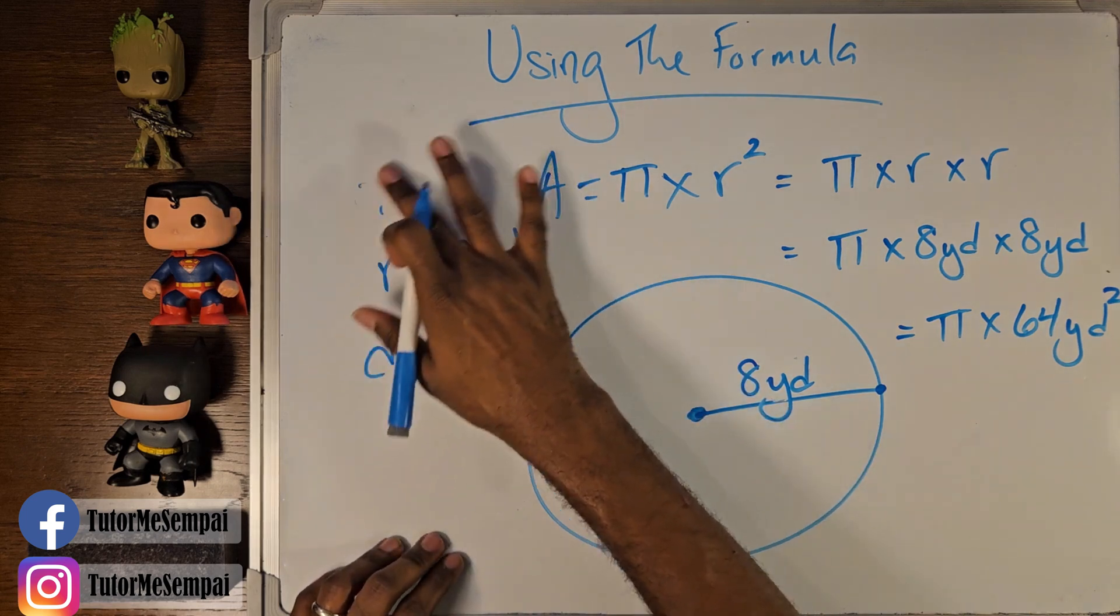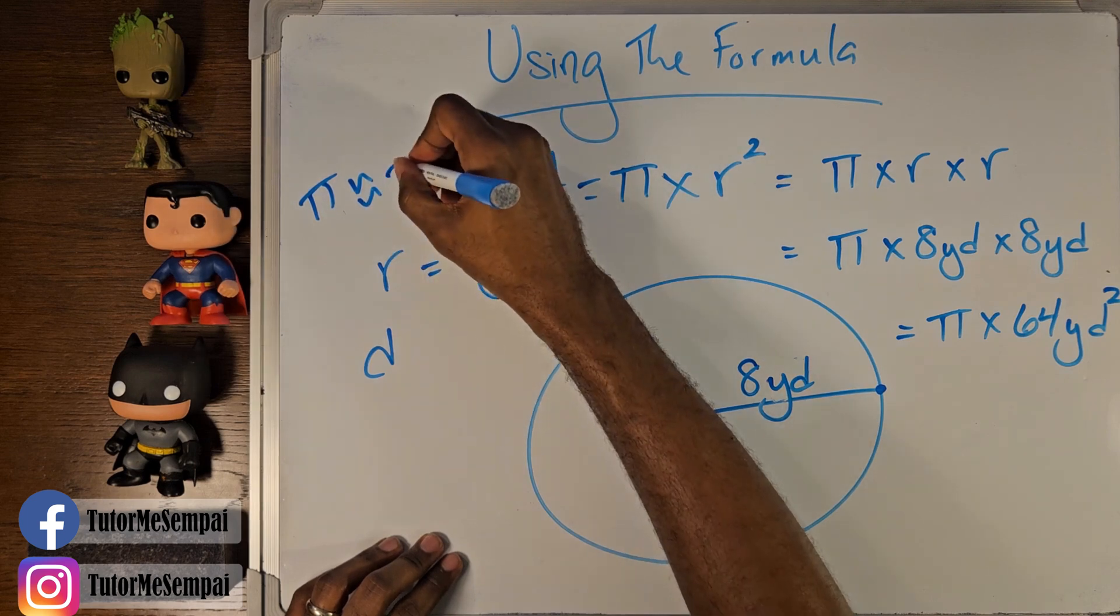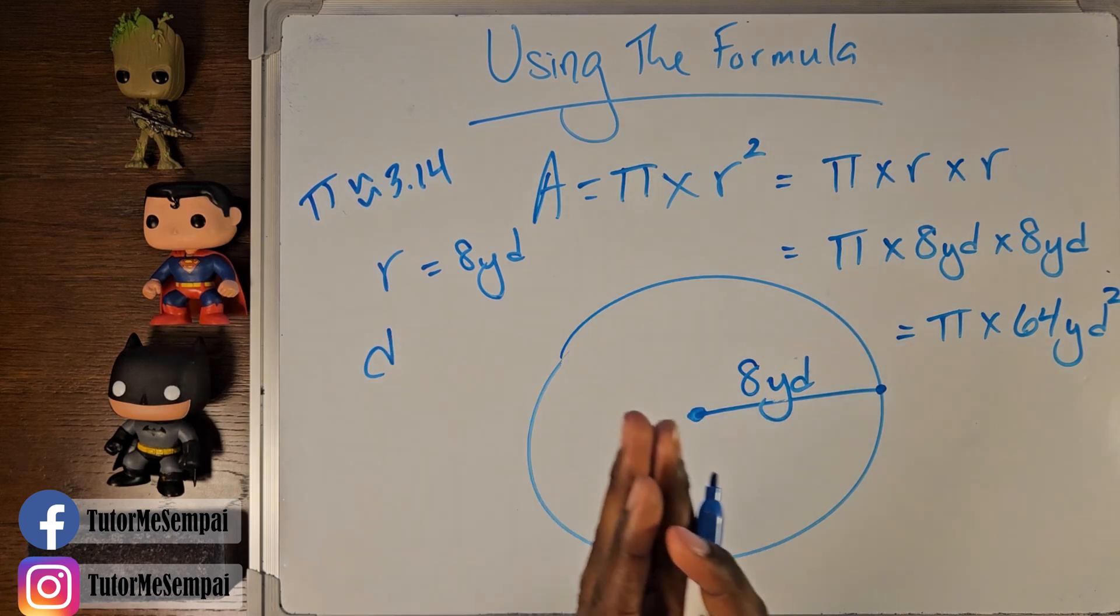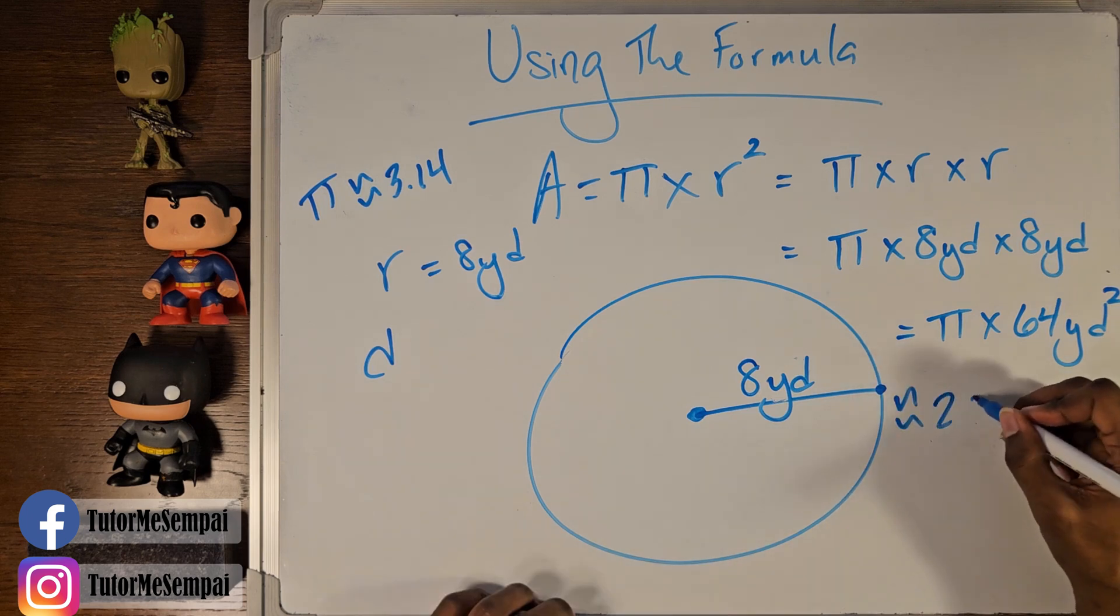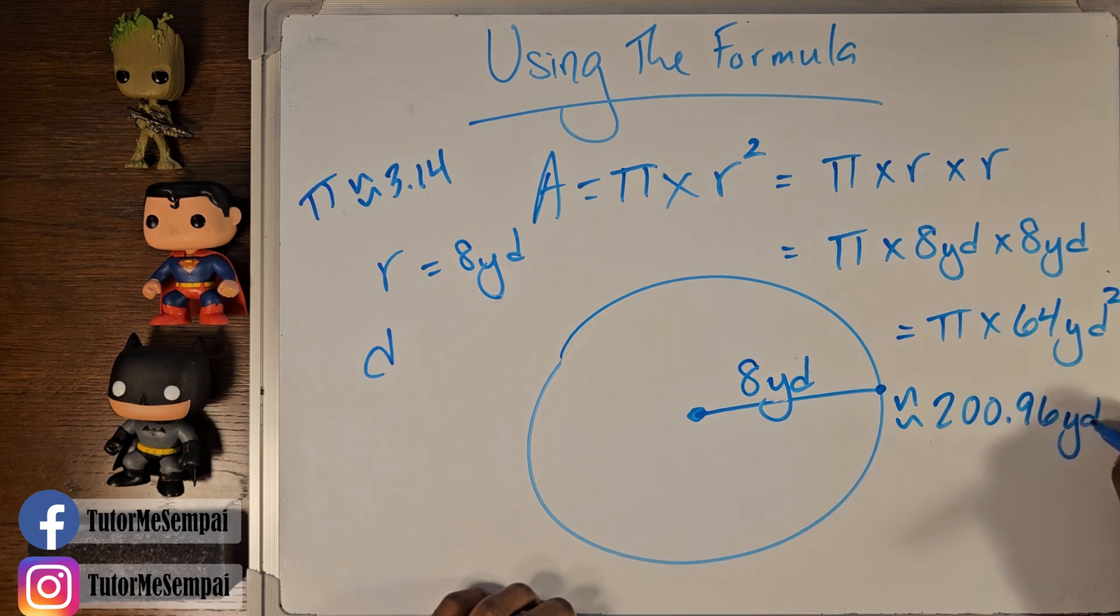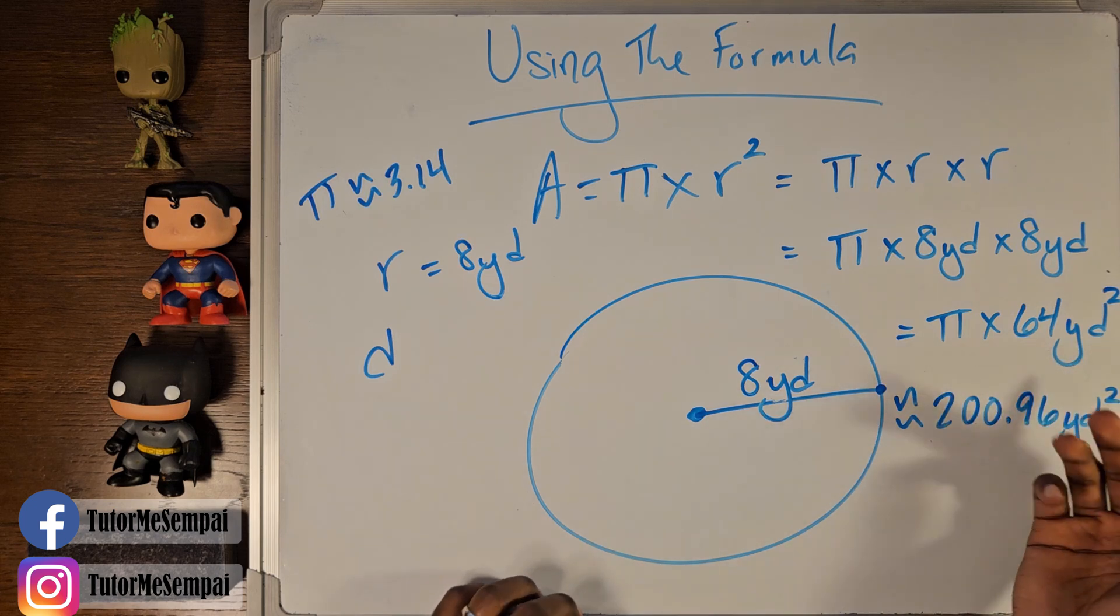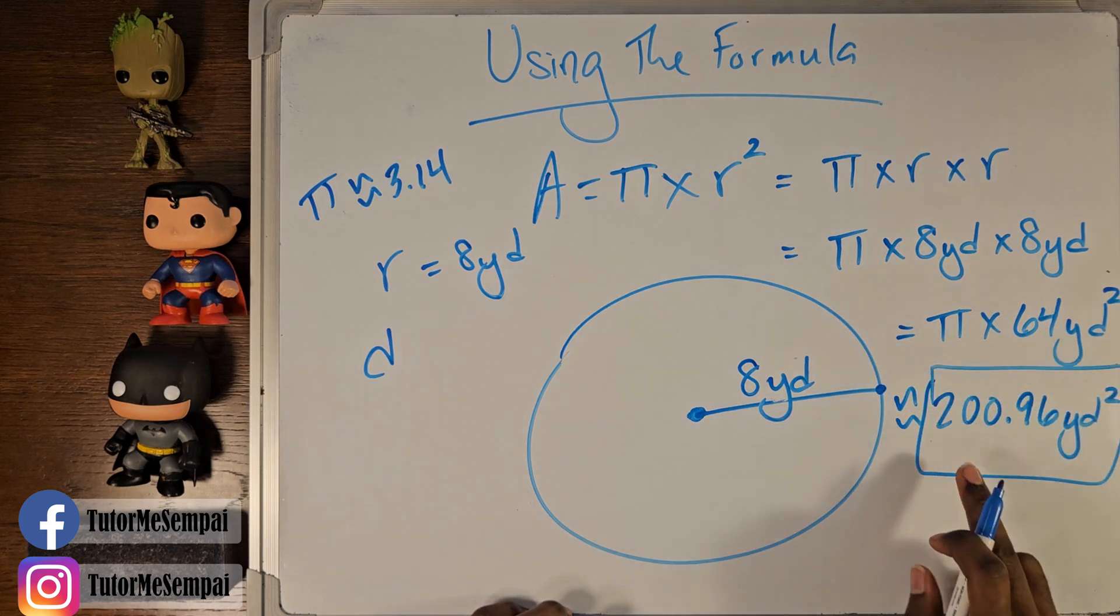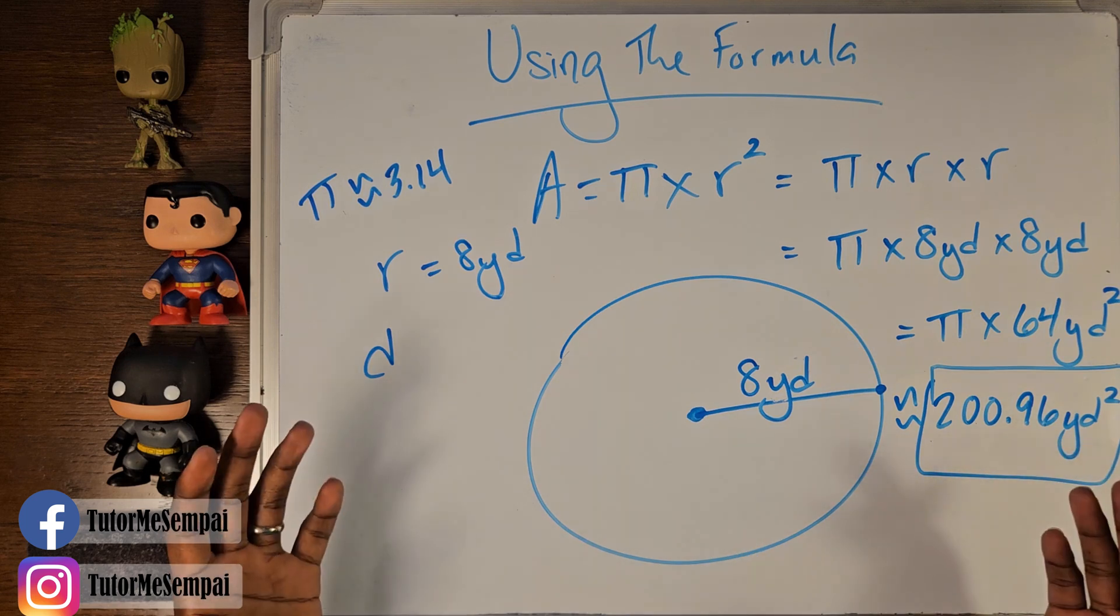Now this is the exact answer. However, we said our pi is going to be roughly 3.14. We're going to cut it off at two decimal places. So we can actually get an approximate value of 200.96 yards squared. So this is going to be the exact value, but if you want to get a rounded value, we can go to this, 200.96 yards squared. And that's how you use your formula.